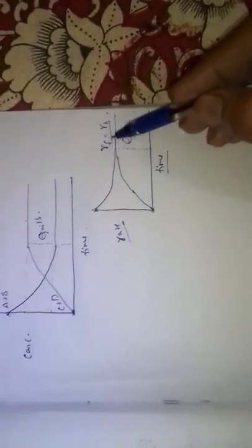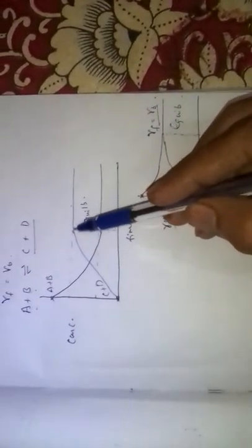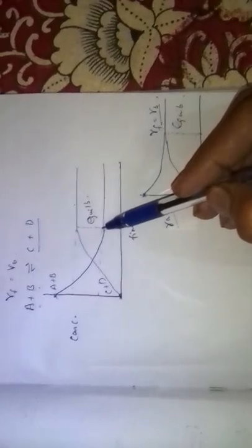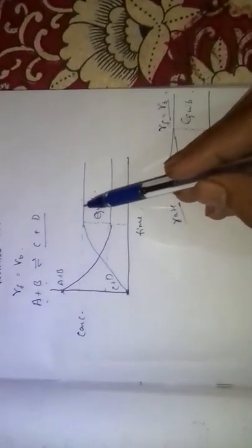This is the graph between rate of reaction and time. At equilibrium state, the rates of forward and backward reactions are equal, but the concentrations of reactants and products may be equal or may not be equal. In many reactions, these concentrations are not equal, but they are unchanged.